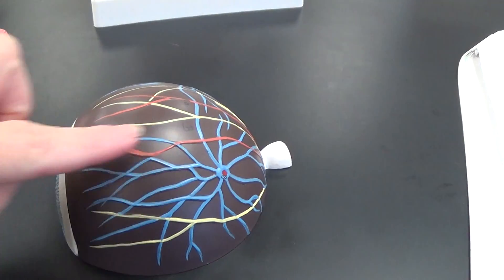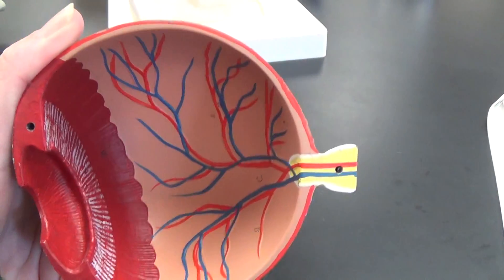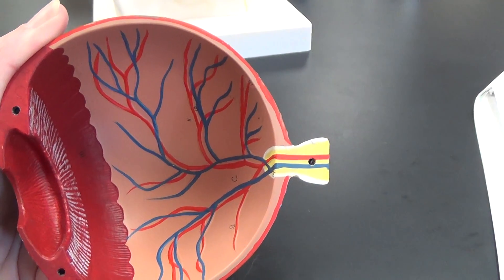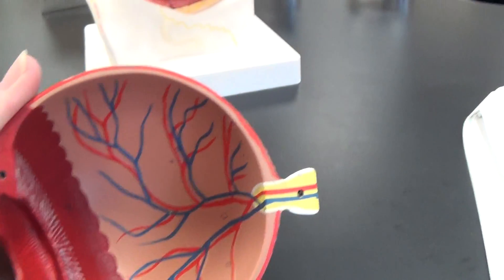This brown layer that we are seeing here is the choroid coat, and when we turn that area over, that lighter colored area with blood vessels that we see is the retina.